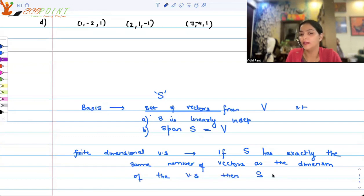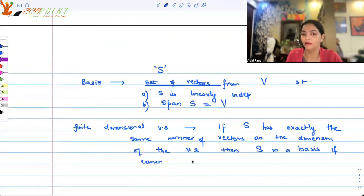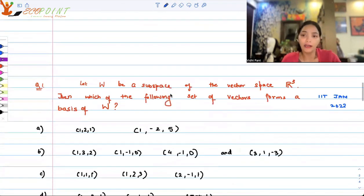Then S is a basis if either S is linearly independent or the span of S is equal to V. So either of the two conditions. Earlier, by the definition of basis, we have two conditions which must be satisfied. That definition is for both finite dimensional vector spaces as well as infinite dimensional vector spaces. But when you have a finite dimensional vector space and you know that the dimension is, say n, if you take up a set which contains exactly n vectors, then that set will be a basis if either that set is linearly independent or it spans. So you have to check for just one single thing. What I'm trying to tell you here is that R³ is finite dimensional vector space because the dimension of R³ is 3.